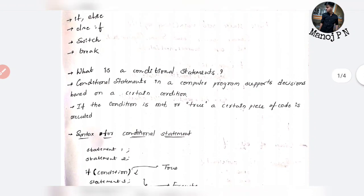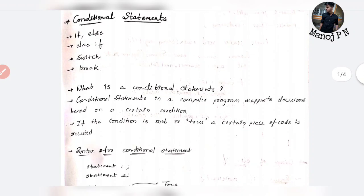So let's start. First, we have the conditional statements. Conditional statements are simple — these are restrictions. For example, if you have homework, the condition is you can do snacks only if you have completed your homework. So if you have completed your homework, then you will get a snack; else you are not going to get any snack. That is a simple example.